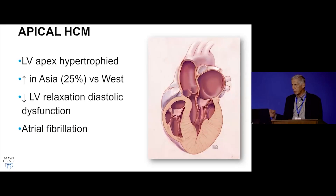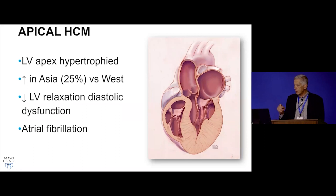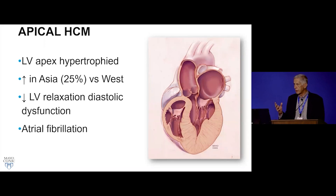Apical hypertrophic cardiomyopathy is more common in Asia, accounting for about a quarter of cases there, compared to about 10% of patients in our HCM clinic. Most patients are asymptomatic, but once symptoms develop, they're very difficult to manage because stroke volume is limited and there's nothing that truly relaxes the muscle. Sometimes the only way these patients maintain cardiac output is by increasing heart rate, so beta-blocking them too much can make them worse. Atrial fibrillation is also common.